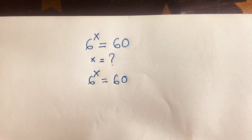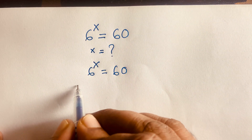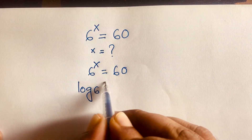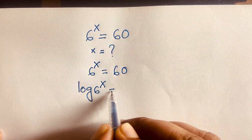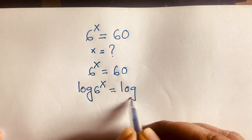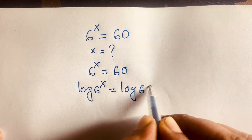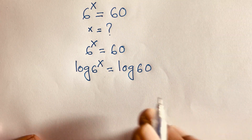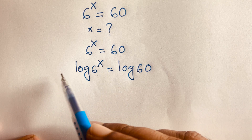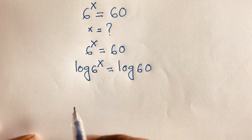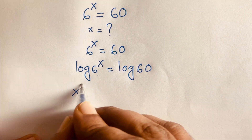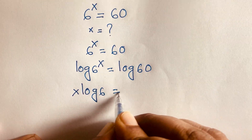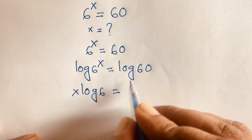I apply log to both sides. So I can say log of 60 to the power of x is equal to log 60. Then, this exponent moves to the front. So it will be x·log 6 is equal to log 60.